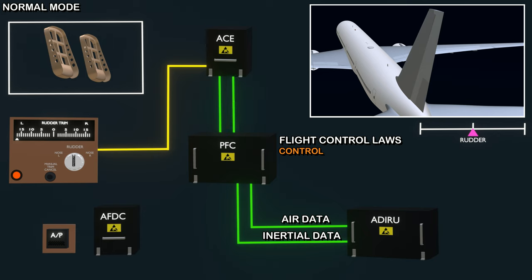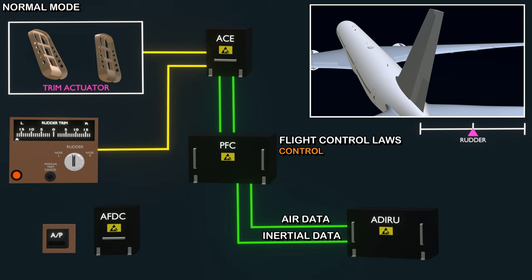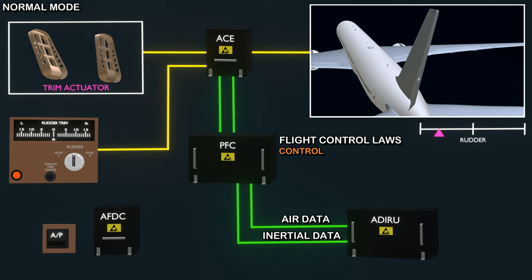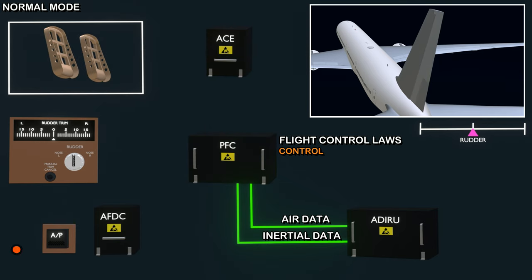The flight computer informs the ACE to operate the trim actuator and move the rudder pedal. Pedal movement results in rudder deflection. The rudder will be held in this position. To return the rudder to neutral, the trim selection has to be cancelled. The autopilot computer is not allowed to control the rudder in the majority of flight phases. The system, when engaged, can request a rudder deflection when the aircraft is in the approach phase and Autoland is active.